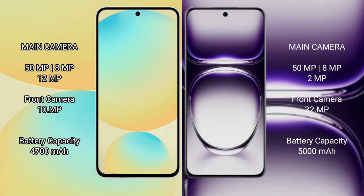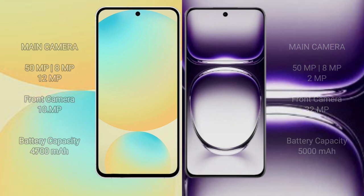Samsung Galaxy S24 FE has a 4000mAh battery with 25-watt fast charging support. Oppo Reno 12 has a larger 5000mAh battery with 90-watt fast charging support.